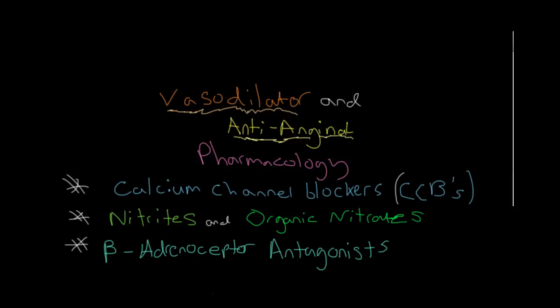Drugs in this class fall into one of three broad categories. We can have the calcium ion channel blockers, or CCBs. There are also a group called the nitrites and organic nitrates. And finally, we can have the beta adrenoceptor antagonists, and I spoke about these in a previous video.